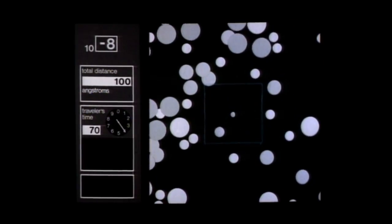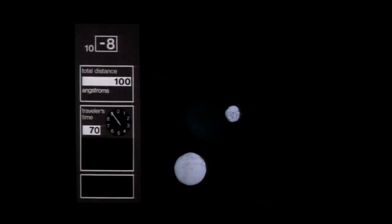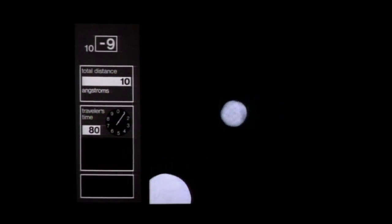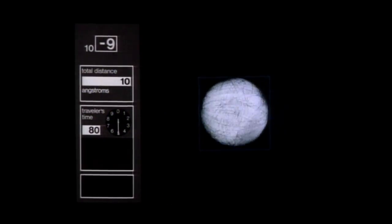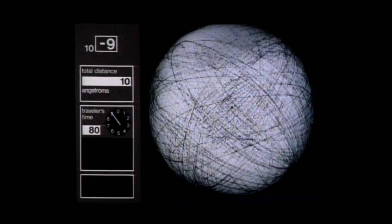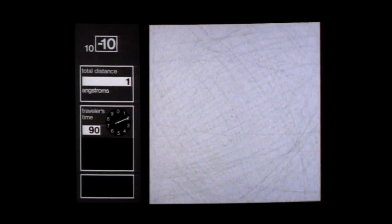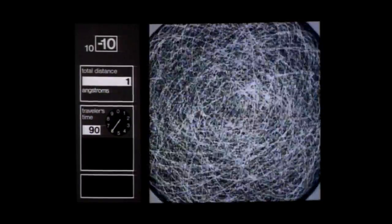At this scale we build models to represent the form of the atom, from information about the components, their size and movements. This is a single carbon atom. Carbon atoms are present in every living thing. An outer shell is defined by the orbital path of four spinning electrons, one angstrom. Passing through this shell we see an inner shell, two electrons orbiting to prescribe a sphere.